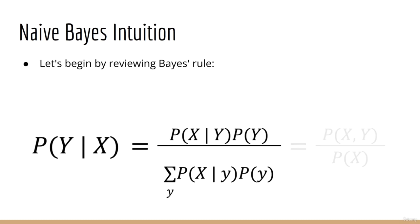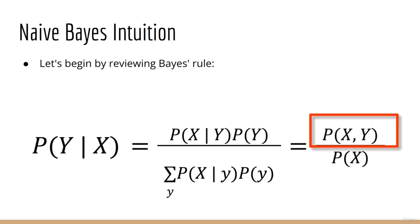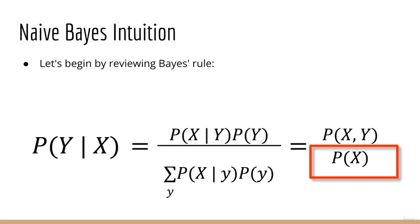As a reminder, recall that the numerator can be simplified to p of x and y, while the denominator can be simplified to p of x. That should give you some intuition about why Bayes' rule is the way it is.